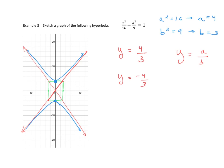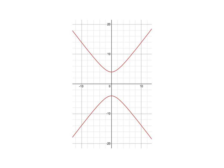Here's the sketch of this graph. I graphed y squared over 16 minus x squared over 9 equals 1 in Desmos, and it matches: vertices at 4 and negative 4, b plotted at negative 3 and positive 3, the box drawn in, and the asymptotes match well.